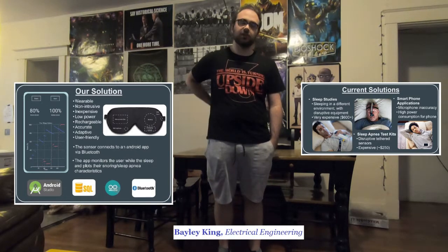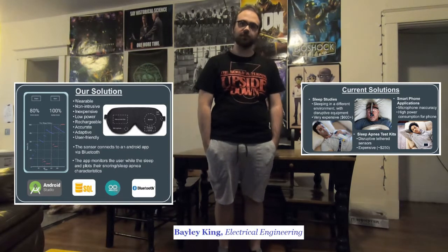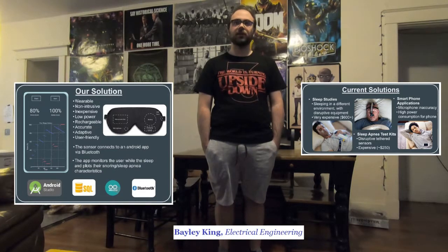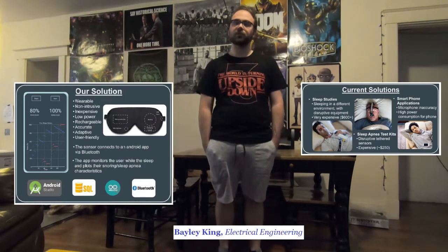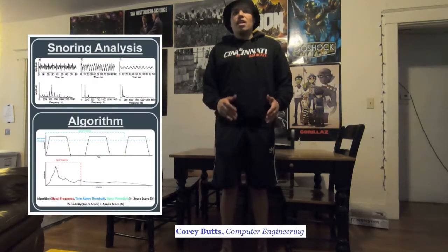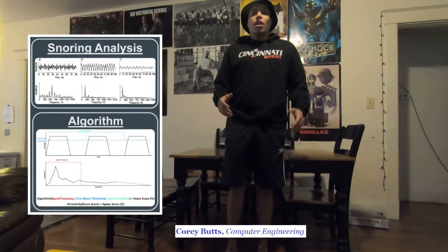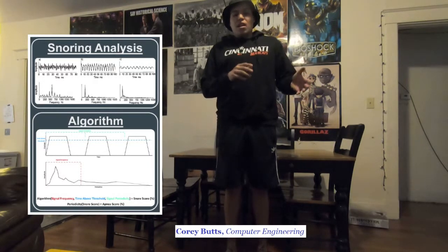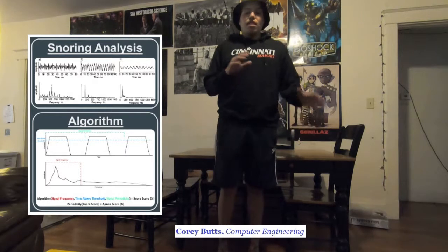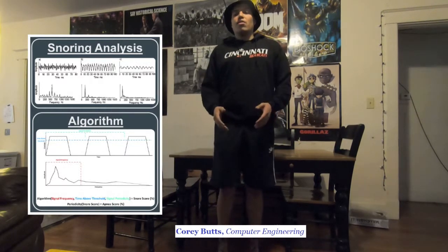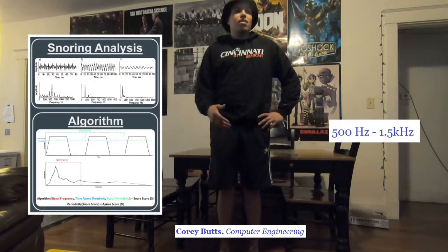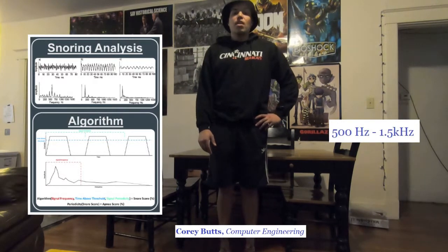We have two scores in the app: a snore score and a sleep apnea score. The application and the Arduino help calculate these scores. We implemented this using Android Studio for the mobile application and store results using a SQLite database. The way the algorithm works is that the microphone takes in an audio waveform, and the Arduino analyzes both the signal waveform and the signal envelope. It first does a DFT transform of the audio signal to determine whether the frequency is within a certain range — we chose about 500 Hz to 1.5 kilohertz, which is typically the frequency range associated with snoring waveforms.